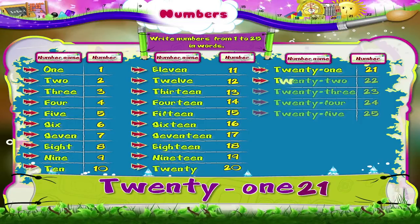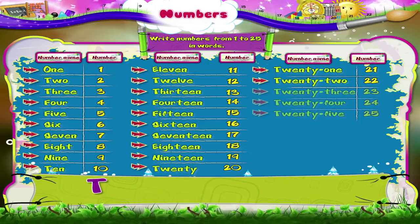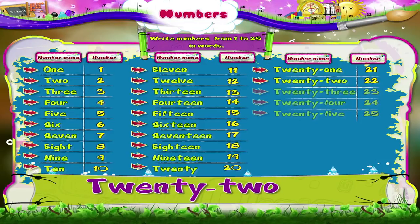T-W-E-N-T-Y 20, T-W-O 2 — 22. T-W-E-N-T-Y 20, T-W-O 2 — 22. T-W-E-N-T-Y 20, T-W-O 2 — 22.